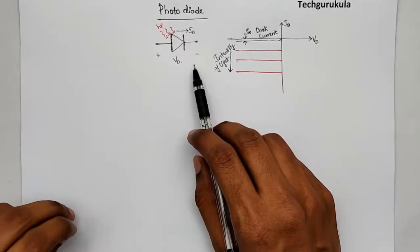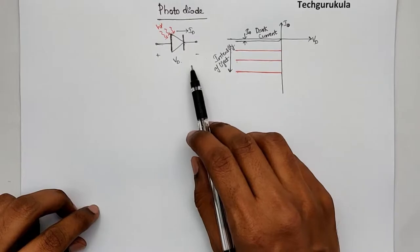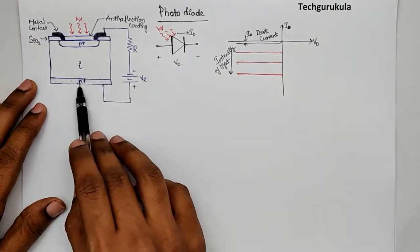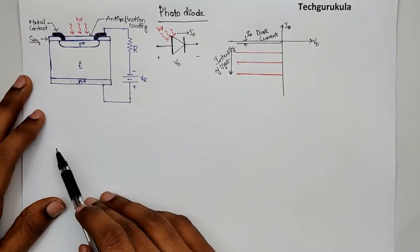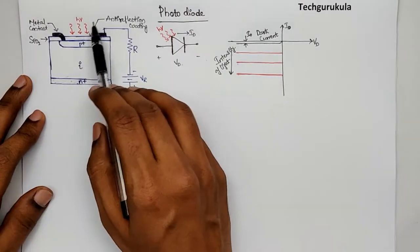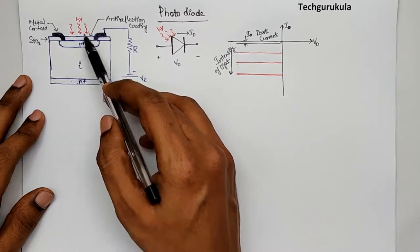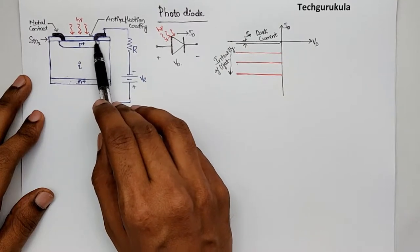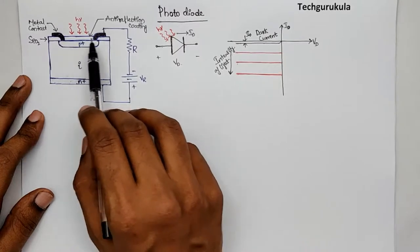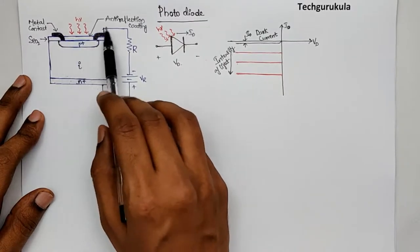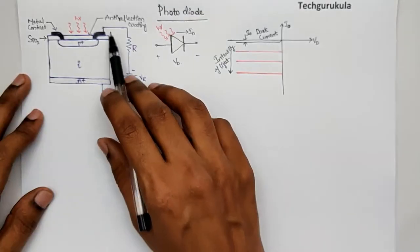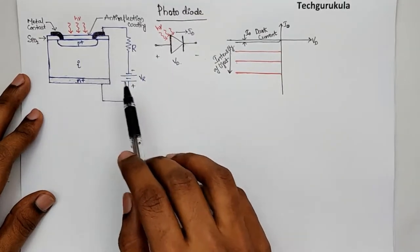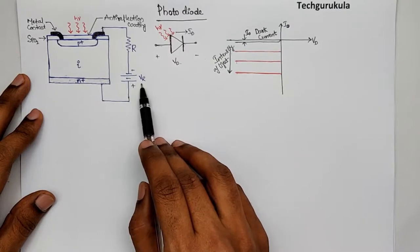The most commonly used diode for photodetection is a PIN diode. Here I've shown the structure of a PIN diode where this is the P region, this is the I (intrinsic) region, and this is the N region. We have an anti-reflection coating so that most of the incident light goes into the PIN diode, and metal contacts connecting the P region. This PIN diode is biased at a reverse bias voltage V_R with a load resistor R.